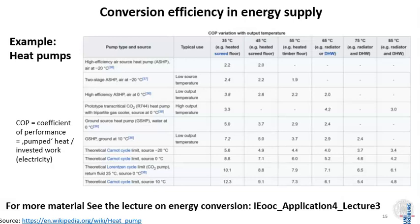Conversion efficiency in energy supply changes over time and with technology. Here the example of heat pumps is shown, with different heat pump technologies performing at different temperature differences. The major heat pump indicator is the coefficient of performance (COP), defined as the heat pumped — moved from the outside into the building — divided by the work needed to do that, usually electricity. There is a wide range of COP values across technologies, leaving room for improvement. Heat pump technology can change for the better, giving consumers and industrial users a range of products to choose from.